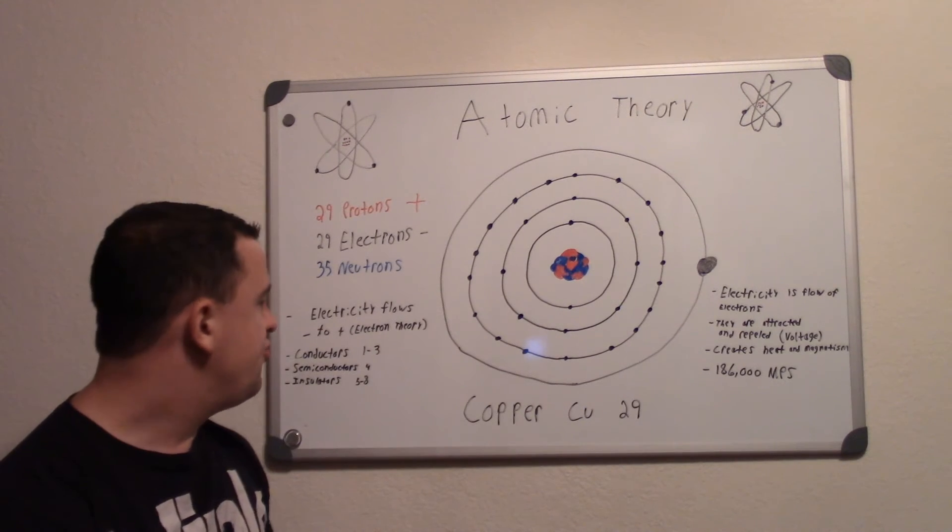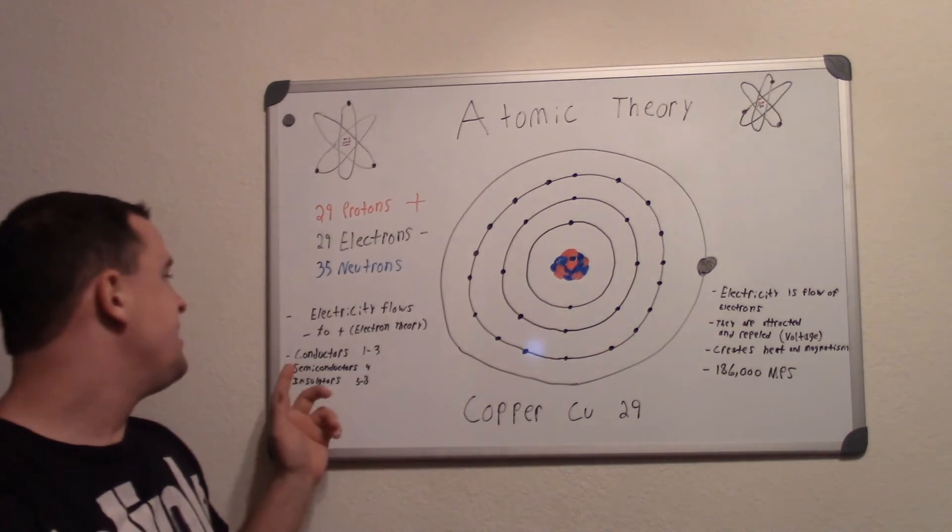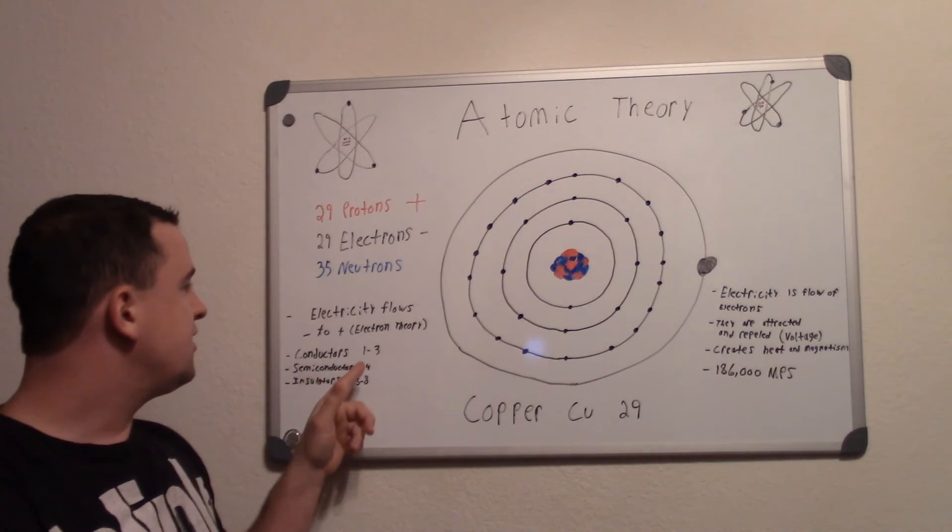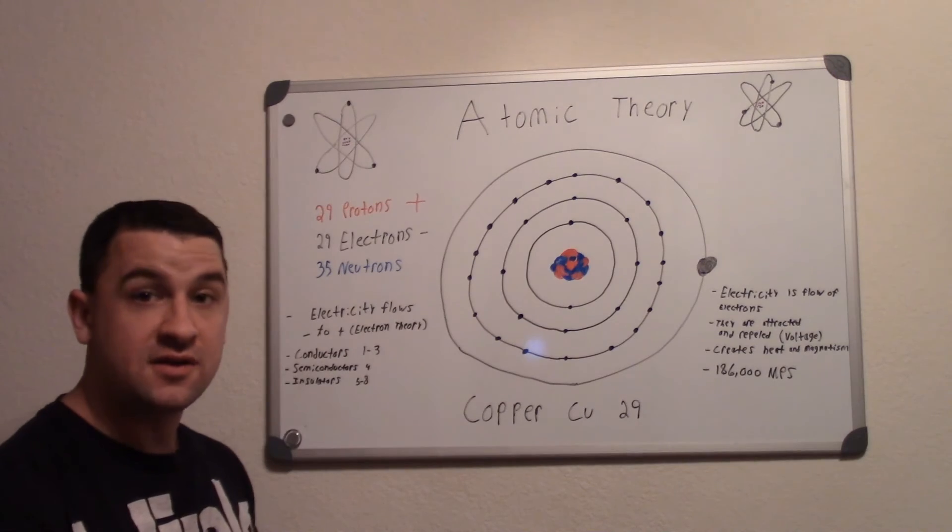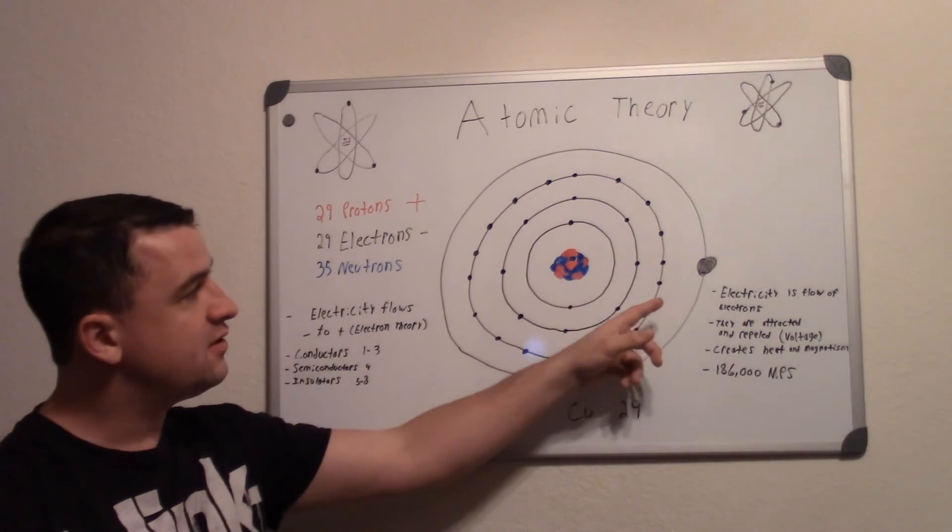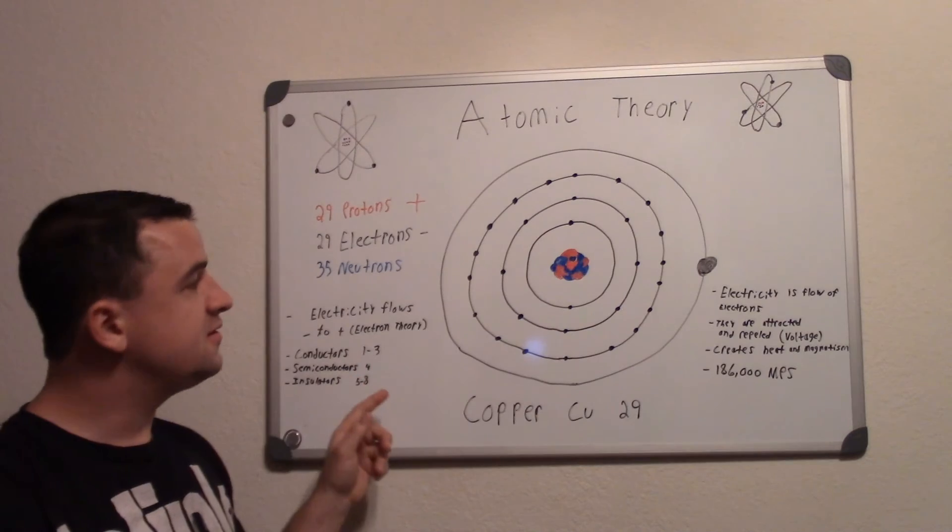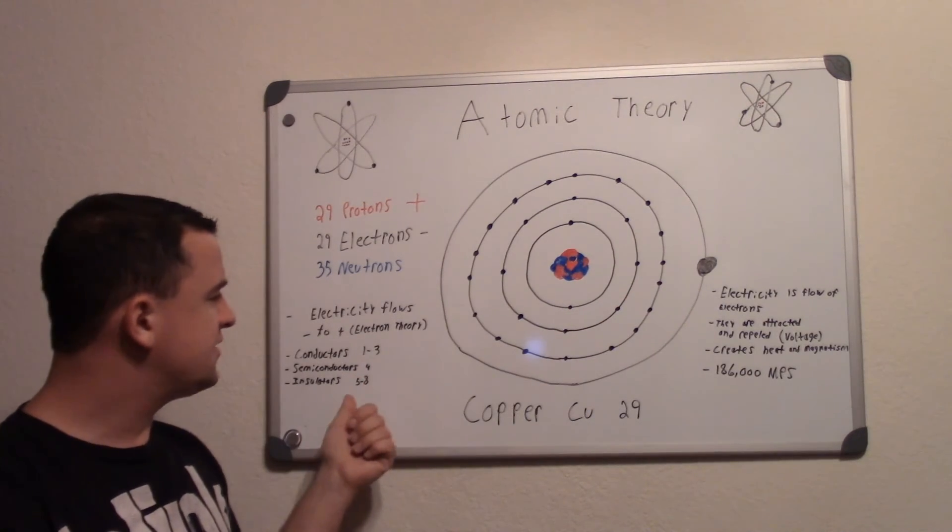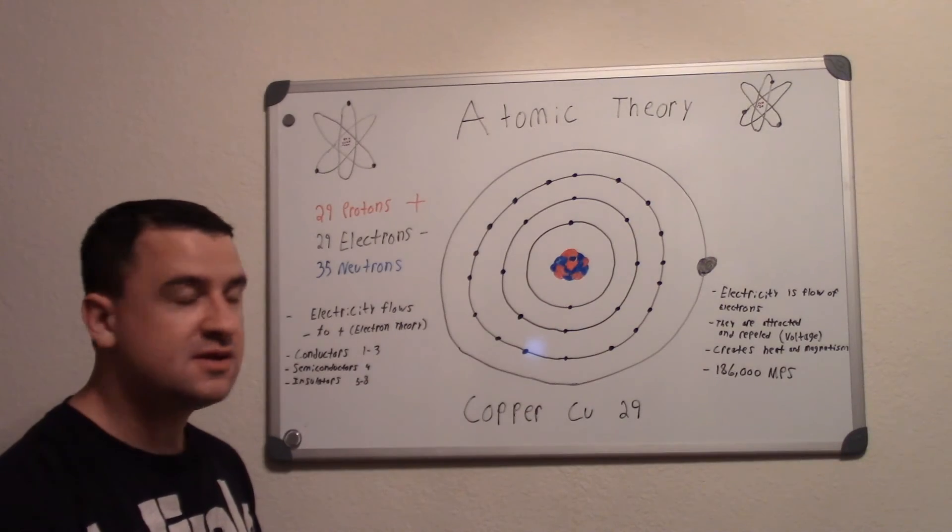So when you have a couple of different types when it comes to electricity as stated here: Conductors, that's stuff that conducts the electricity, conductors have one to three free electrons. Semiconductors have four free electrons. And insulators have five to seven or eight free electrons.